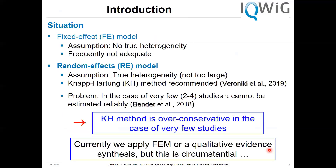Most of you will know that we have two main models in meta-analysis. We have the fixed effect model, which is better called the common effect model, because the assumption is that we estimate the common effect in all individual studies. This is a very strict assumption and frequently not adequate. More important is the random effects model, where we allow some heterogeneity, though it should not be too large for pooling to be meaningful.